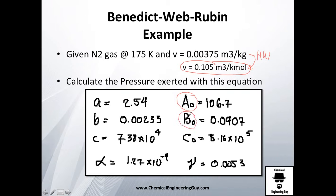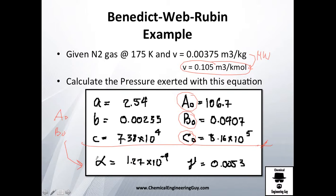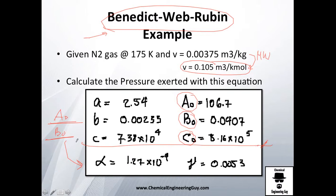The good thing is you don't need to calculate a-zero, b-zero, and c-zero each time — they are all available in one graph or table. The Benedict-Webb-Rubin equation, even though it comes from the Beattie-Bridgeman equation, is easier because those constants are given as data.